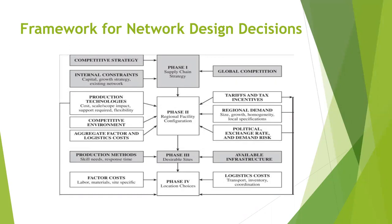This framework has been categorised into four categories: supply chain strategy, regional facility configuration, desirable sites, and location choices. Under each and every phase, there are some factors which need to be considered for an effective network design decision.